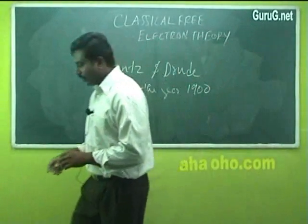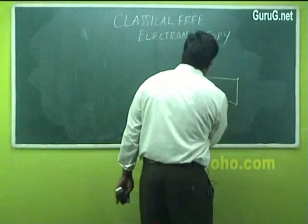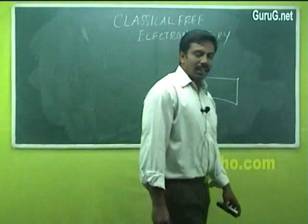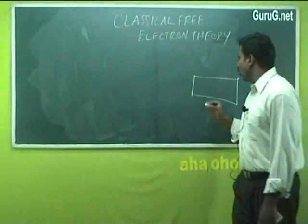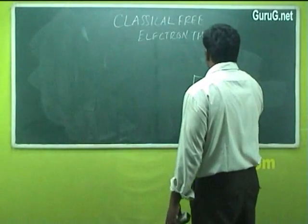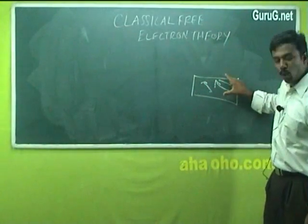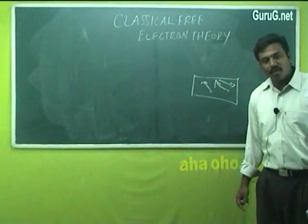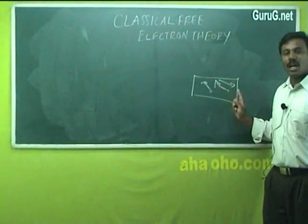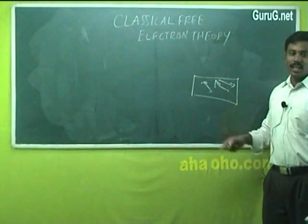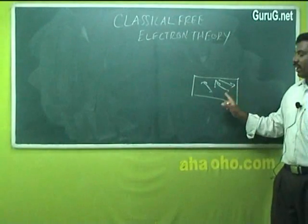According to this theory, before the application of the electric field, in the case of metals the conductivity is mainly due to the number of free electrons present — that is, the valence electrons. Before the application of the field, all these electrons move freely in random directions within the boundary of the specimen. These free electrons and ions collide with each other without any loss of energy, so the total energy is purely kinetic energy and the potential energy is zero.